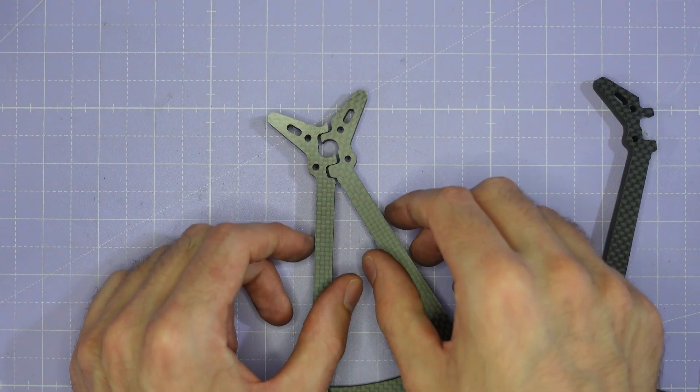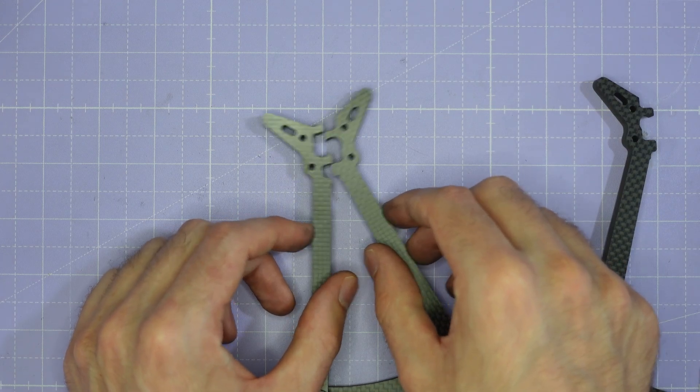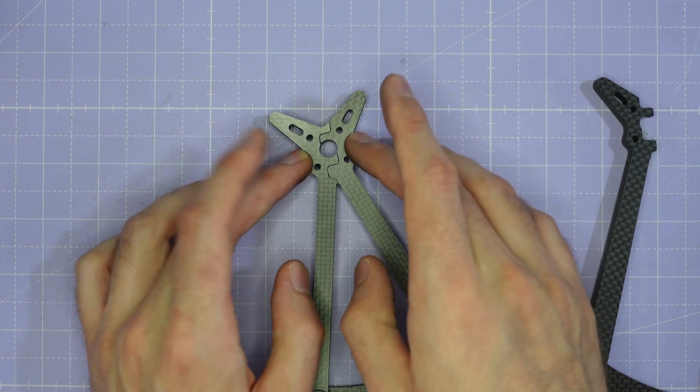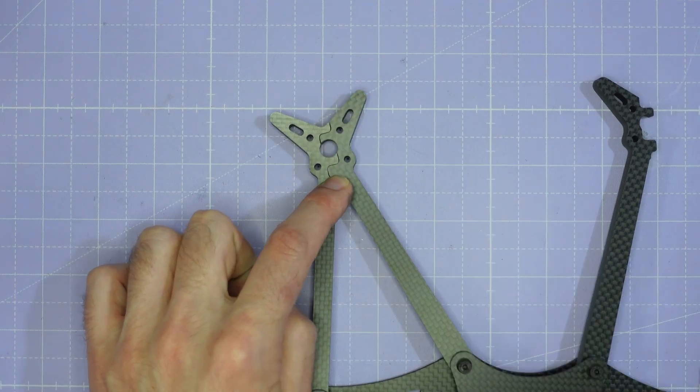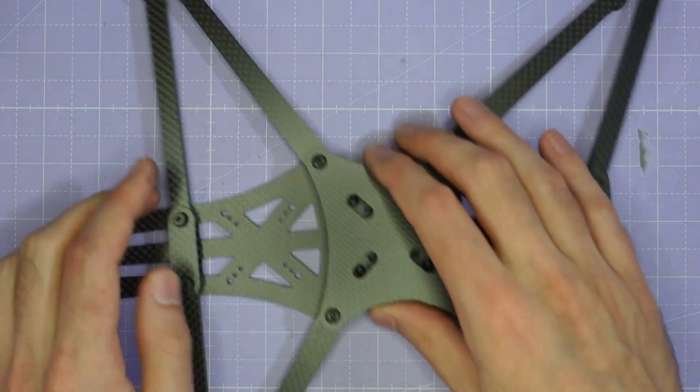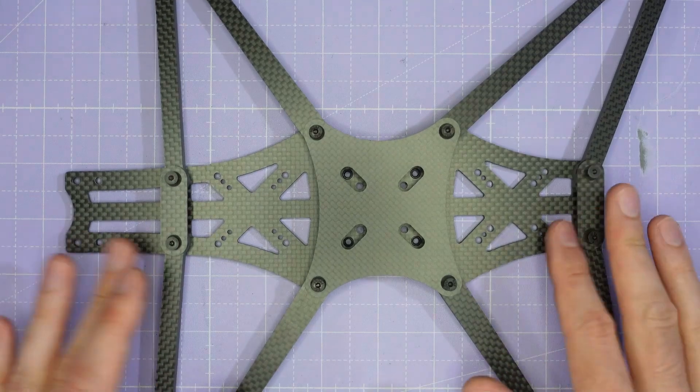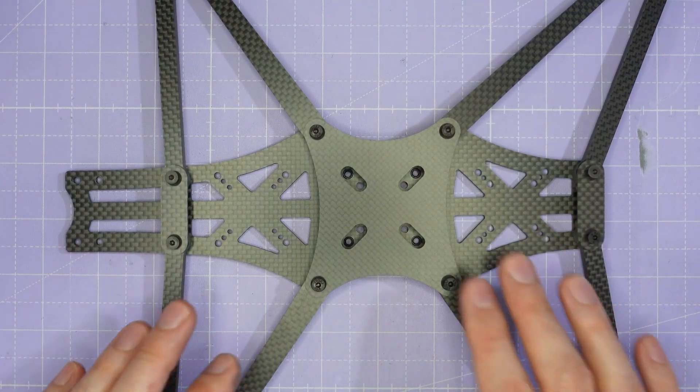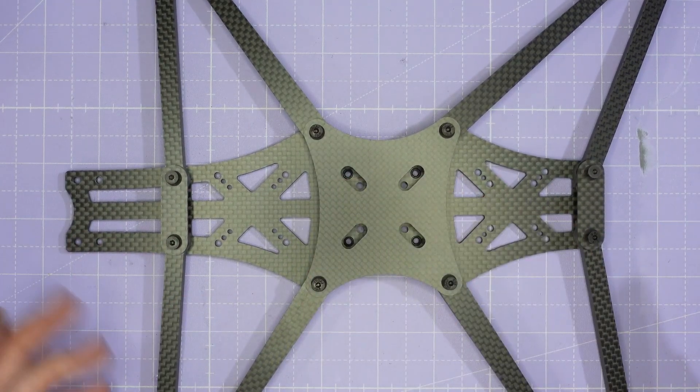Don't worry if the arms move around a little bit they can kind of come apart and go together. That's obviously all going to be secured when you attach your motors but for now we just need to make sure all the screws on this main plate are reasonably tight and of course we can always give them a final tighten after we've installed the motors.